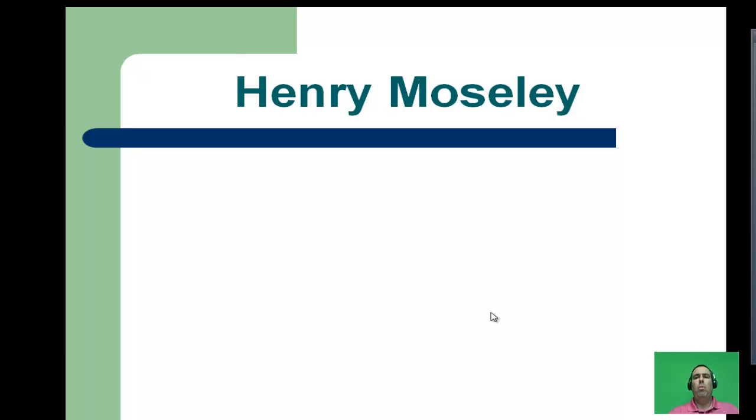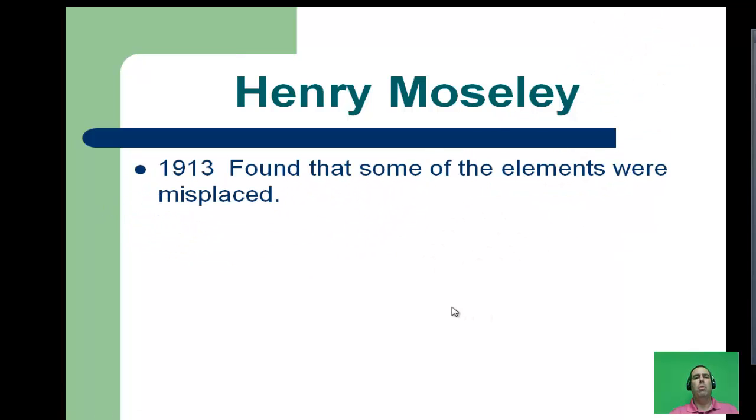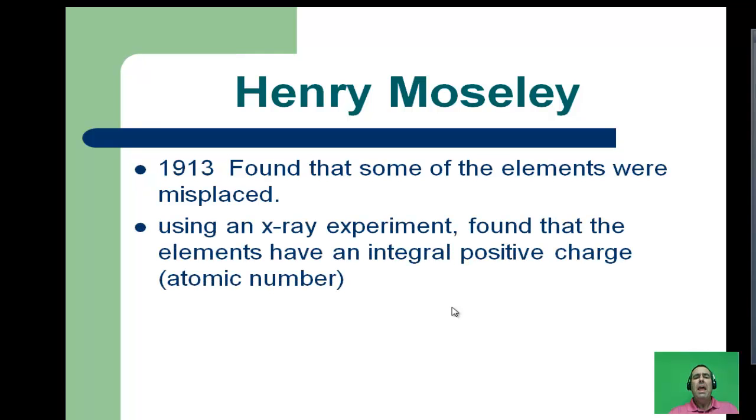Henry Moseley comes along and starts looking at Mendeleev's periodic table. Technology is a little bit better. About 1913, he finds out that Mendeleev wasn't completely correct—there were a few of the elements that were misplaced. He did an x-ray experiment, and during this experiment, he found that there was an integral positive charge. Think in math: integer, whole number. He found that every single element had an integer or integral positive charge.